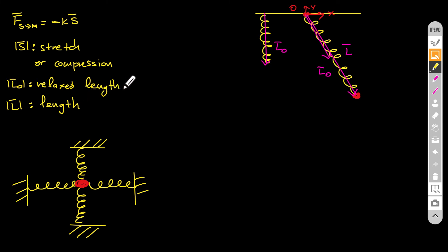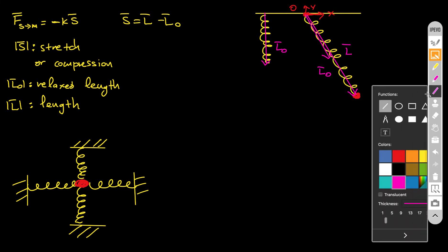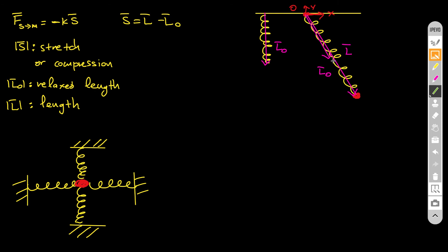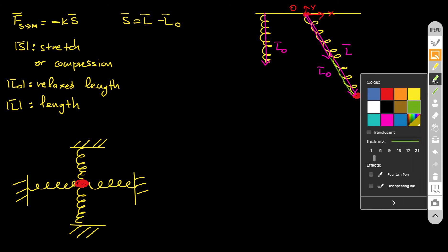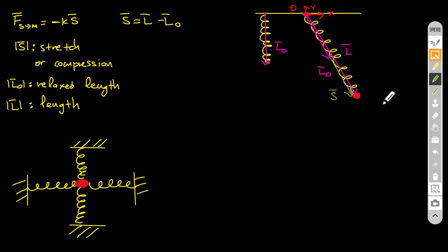To find s, I define s to be l minus l0. The vector s goes from the tip of l0 to the tip of l. The magnitude of s gives the stretch or compression of the spring, and the vector s also shows the direction along which the force from the spring will be acting.